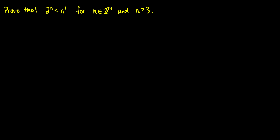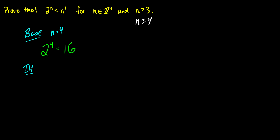So that's the first proof. The second proof: we're going to prove that 2 to the n is going to be less than n factorial for all n greater than 3, which is the same as saying n greater than or equal to 4. So two steps: one is the base case, the other is the inductive hypothesis. For the base case we have n is equal to 4. So 2 to the 4 is equal to 16, and we're saying this is going to be less than n factorial, so that's 4 factorial which is equal to 24. So we're good here.